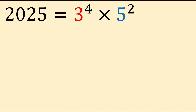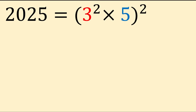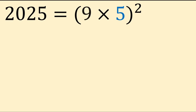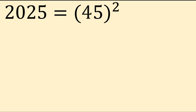All of our powers — 4 and 2 — are even. This is nice, as you can pull out a factor of 2 from each of the powers and stick it on the outside as a square. 2025 is equal to (3² × 5)², all squared. 3² is 9, and 9 times 5 is 45. Hence, 2025 is 45 squared.